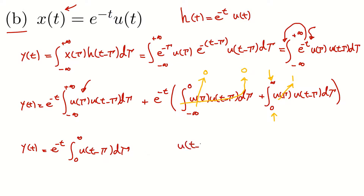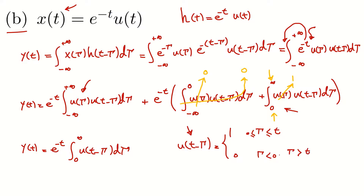We know that u(t - τ) equals 1 if t - τ > 0, meaning τ < t, and since we already assumed τ > 0, this applies when τ is between zero and t. Otherwise, for τ > t, the value of this function is zero. Bear that in mind — we will use this shortly.